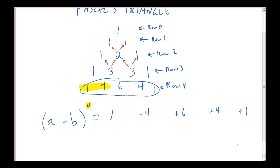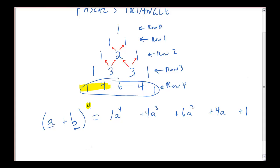Now, what do I multiply these coefficients by? If I'm raising a plus b to the fourth, I'm going to put a to the fourth in the first term, then a to the third in the second term, a to the second in the third term, a to the first — which I normally just write as a — and then a to the 0. I would put a to the 0, but anything to the 0 power is just 1, and I don't usually write it down because multiplying by 1 isn't going to change a value. Then I take the b's and do the same thing, but start from the right: b to the fourth, b to the third, b to the second, b to the first, and b to the 0 — which I'm not going to write down.